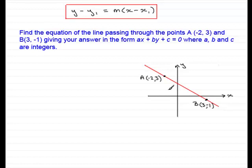We've got the points A and B, A at (-2, 3), B at (3, -1) and we've got the line passing through this. Now, first of all, I need to find the gradient because in this question we're not given the gradient.